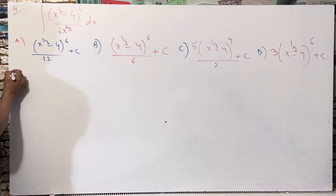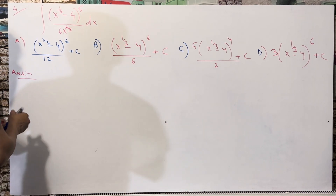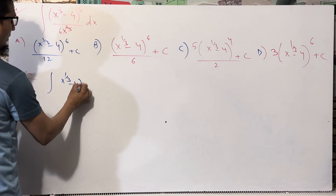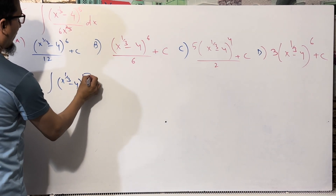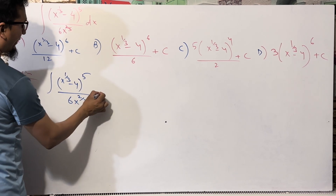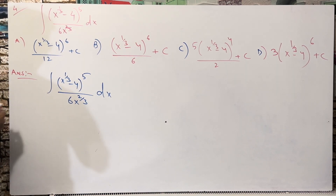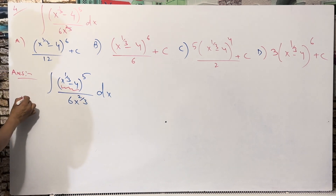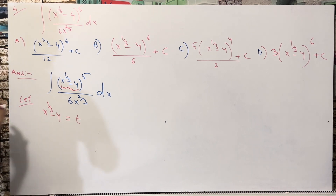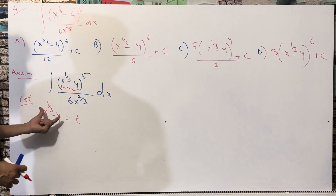We are going to solve this question. The integrand is (x^(1/3) minus 4)^5 divided by 6x^(2/3), dx. Let's assume x^(1/3) minus 4 equals t.